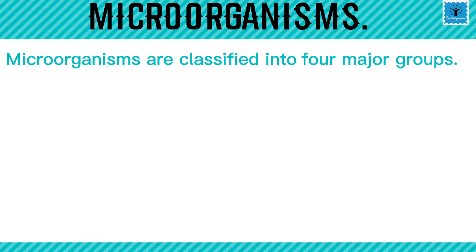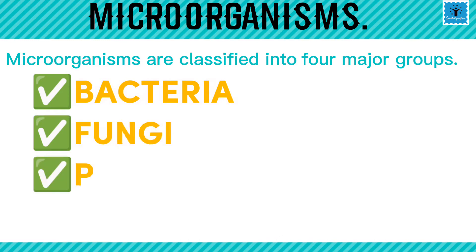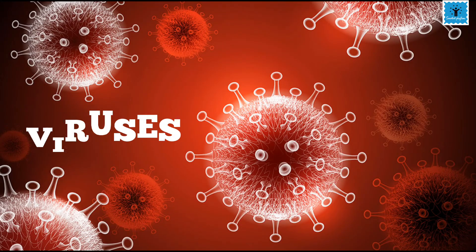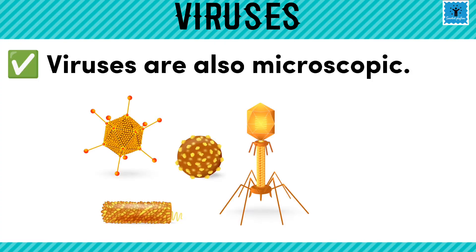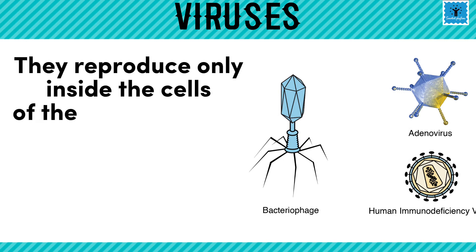Microorganisms are classified into four major groups: bacteria, fungi, protozoa, and algae. Other than these four categories, viruses are also microscopic but are different from other microorganisms because they reproduce only inside the cells of the host organism.